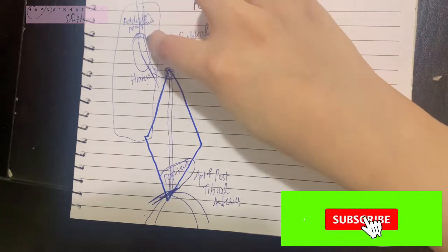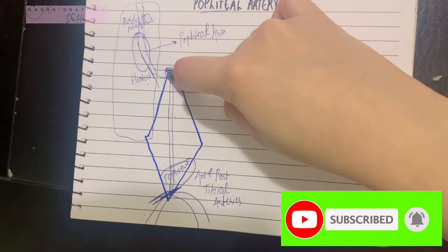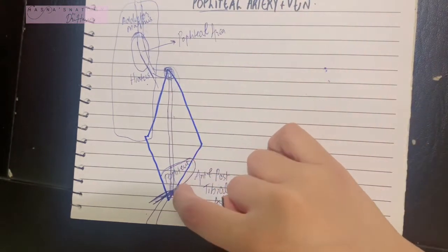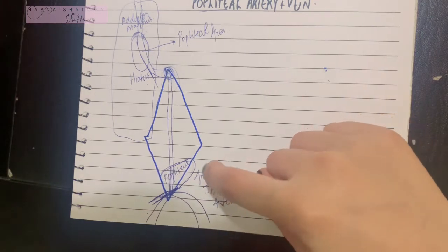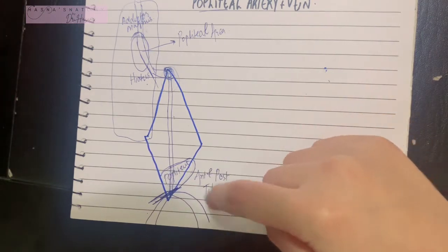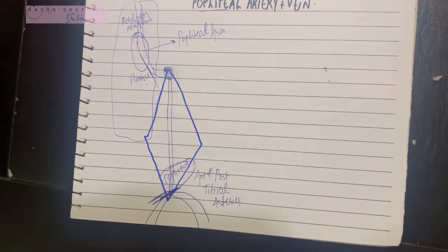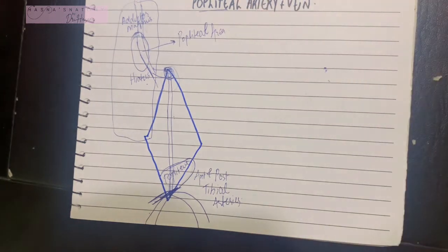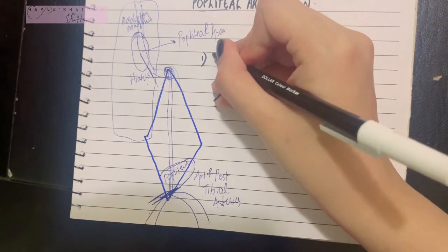The moment the popliteal artery reaches the lower border of the popliteus muscle, it terminates as the anterior and posterior tibial arteries. To summarize: the origin is the continuation of the femoral artery at the hiatus magnus; it traverses the popliteal fossa from its superior to inferior angle; and it terminates by dividing into the anterior and posterior tibial arteries at the lower border of popliteus.